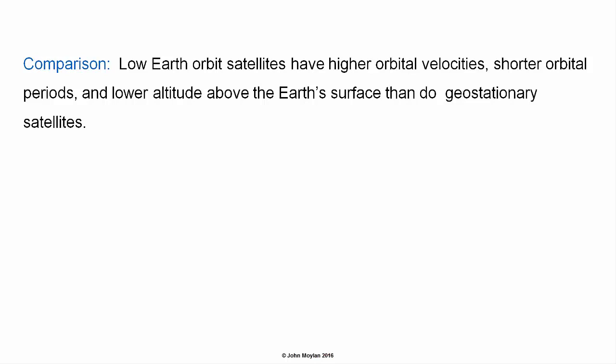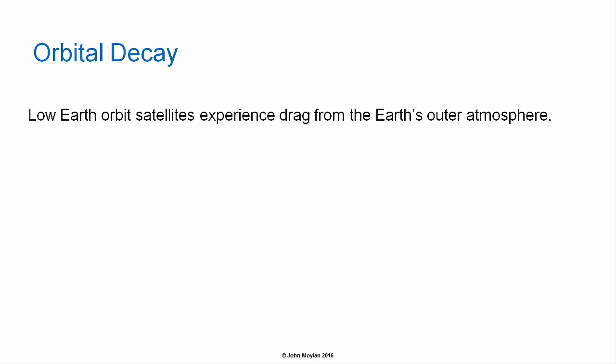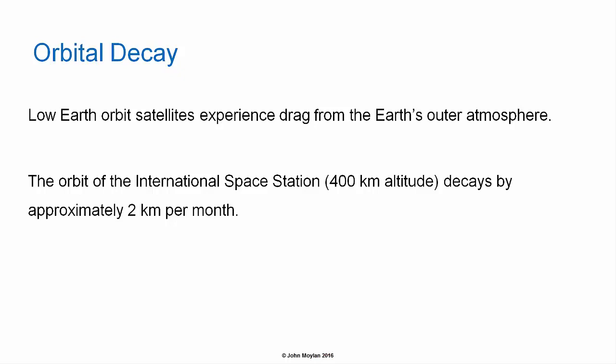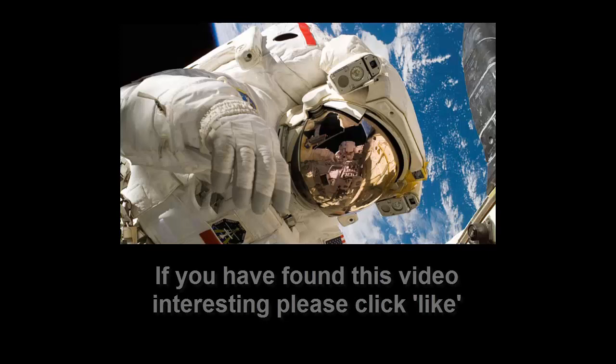This table compares LEO satellites, which orbit between approximately 200 and 2,000 kilometers, with geostationary satellites at approximately 36,000 kilometers. LEO satellites have higher orbital velocities and an orbital period of around one and a half to just over two hours, versus the 24-hour period of geostationary satellites. Regarding orbital decay, LEO satellites experience atmospheric drag within the thermosphere, and the ISS orbit decays by approximately two kilometers per month.